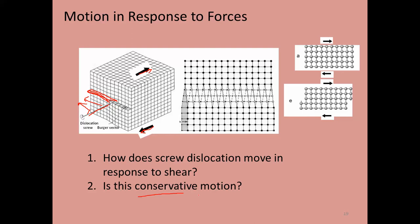Is this conservative motion? We need to find the plane containing both the tangent to the dislocation and the Burgers vector. In screw dislocations, the Burgers vector and the dislocation line are parallel. So there is a plane containing both — that would be slip.